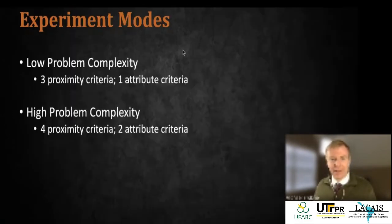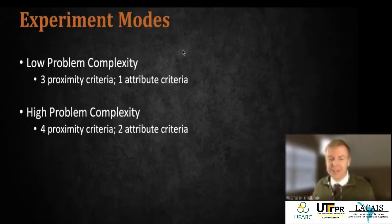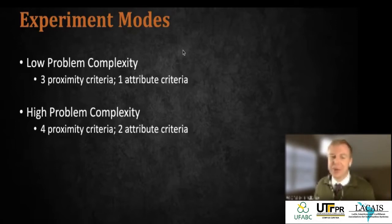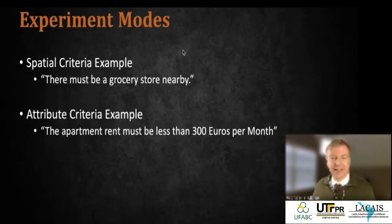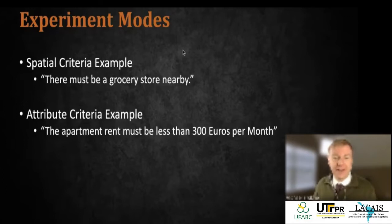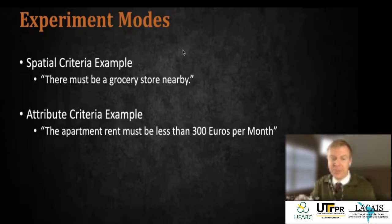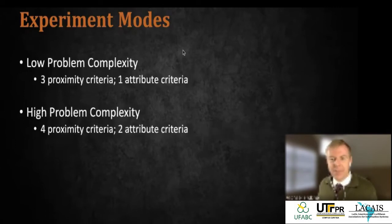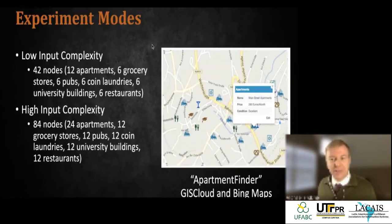Here's what participants saw: a map with a fictional university on a real base map, and fictional apartments and points of interest. Clicking on a symbol — represented by a bed icon for apartments, pretzels for restaurants, and so on — revealed information like 'Main Street Apartment, 280 euros/month, condition: excellent.' For low input complexity we had 42 objects with 12 apartments; for high input we had 84 objects with 24 apartments.